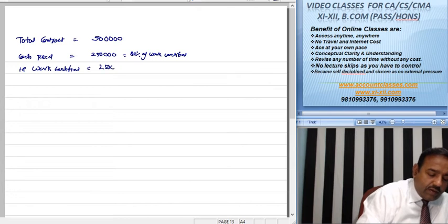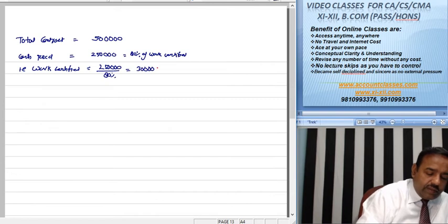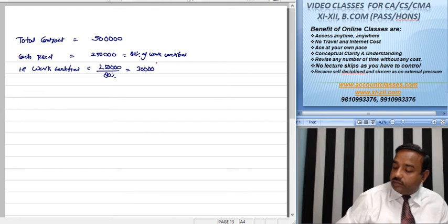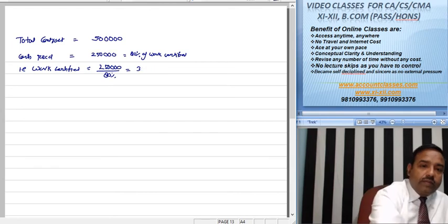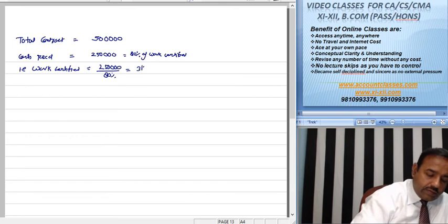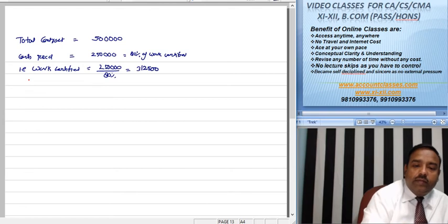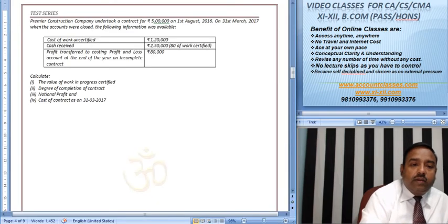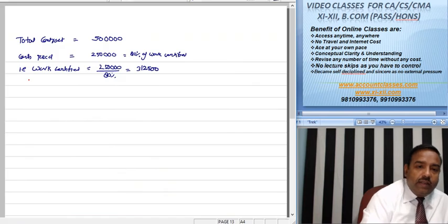This is our work certified: 2,50,000 divided by 80% equals 3,12,500. So, this is the value of work certified. The first answer is this.